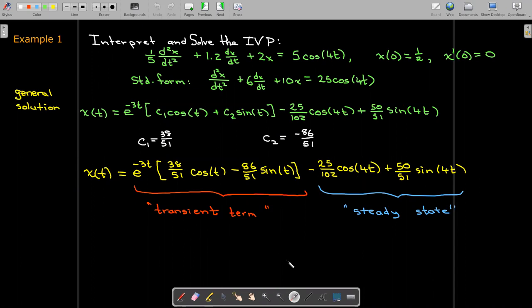And you'll notice that there is a term that's multiplied by an exponential term with a negative exponent. So as t goes to infinity, that term becomes negligible. And that's what we call the transient term. And then the oscillatory part is our steady state.